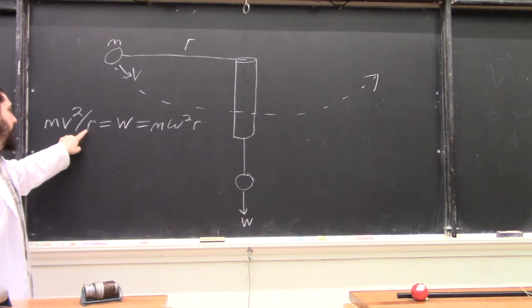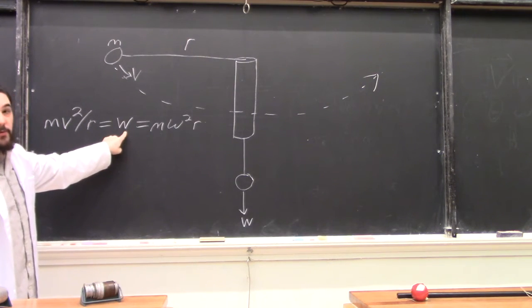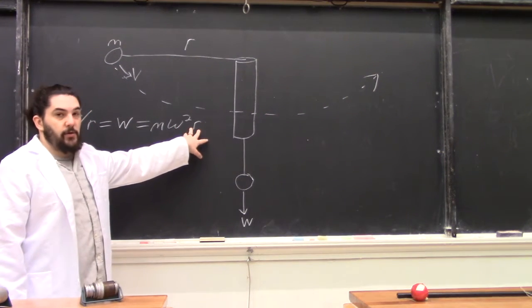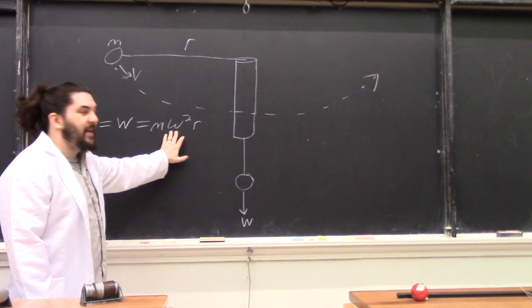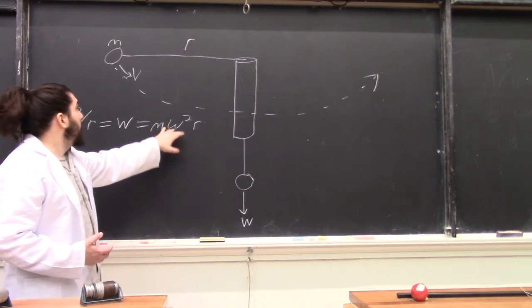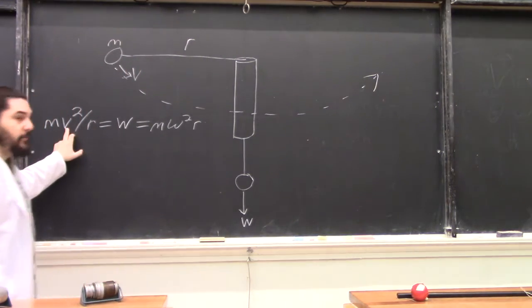If the radius goes down, the velocity must also go down in order for the centripetal force to remain constant. Conversely, if the radius goes up, the angular velocity has to go down. So it can actually look like it's going slower when the radius is large, even though it's technically going at a higher velocity.